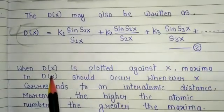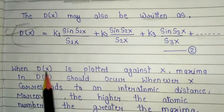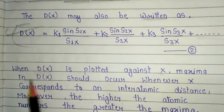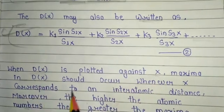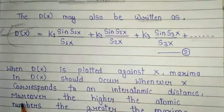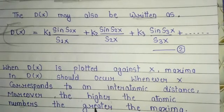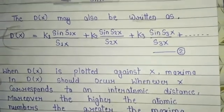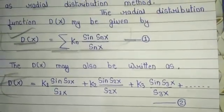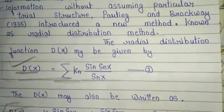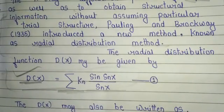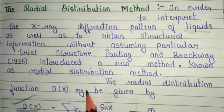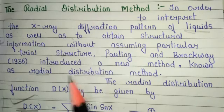When D(x) is plotted against x, maxima in D(x) should occur whenever x corresponds to an interatomic distance. Moreover, the higher the atomic number, the greater the maxima. This completes the discussion about the Virial equation and the radial distribution method, which are very important for semester exams and the CSIR NET exam. Thank you so much for watching.